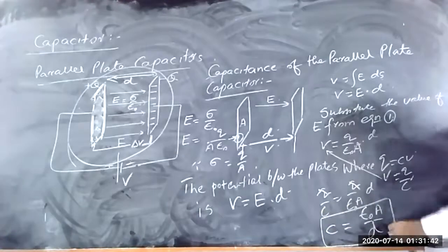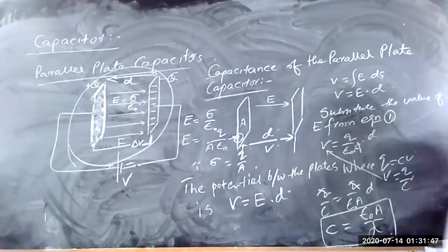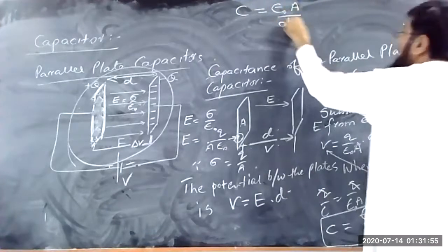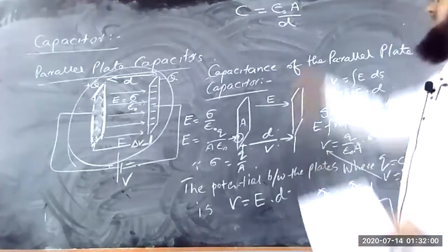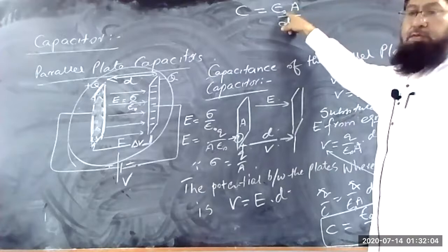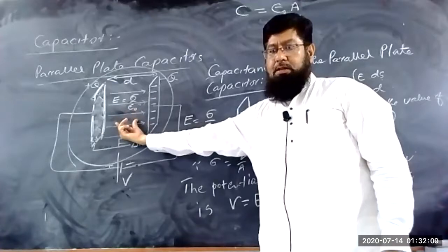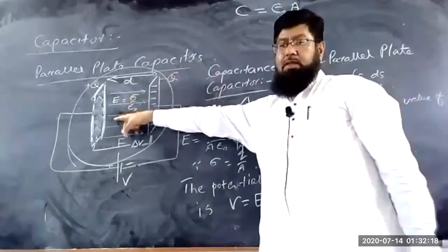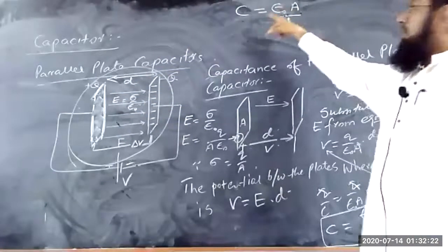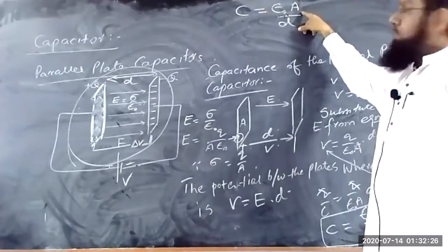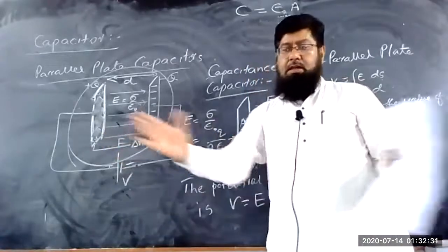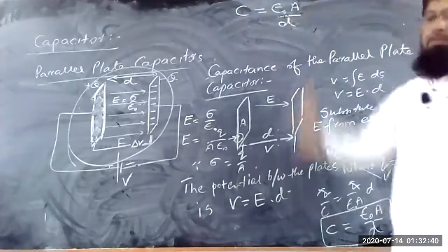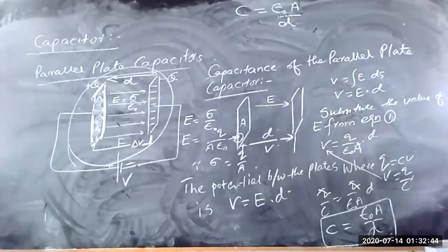So C = ε₀A/D is the capacitance of the parallel plate capacitor. Here ε₀ is the permittivity of free space, describing the medium. If the medium between the plates is air or vacuum, we write ε₀. If we increase the area A, the capacitance increases. If we increase the separation D, the capacitance decreases — C is inversely proportional to D.